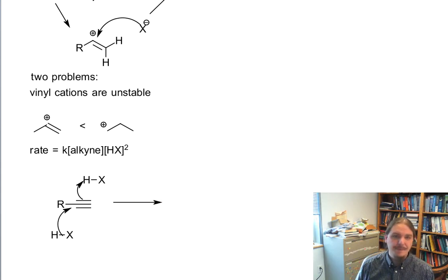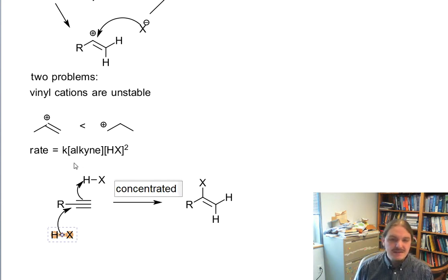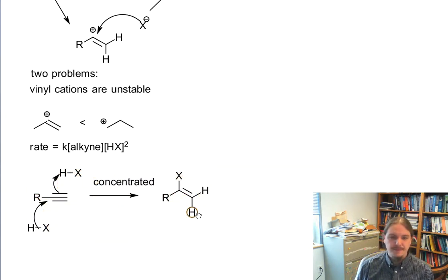So it's a concerted mechanism instead of a stepwise mechanism. It avoids the carbocation and avoids the unfriendliness and also has the right number of the different species in the rate-determining step. Note that there's not necessarily 100% agreement in the organic chemistry community that this is in fact the agreed upon mechanism but it's a pretty good proposal that matches the rate law data at least.